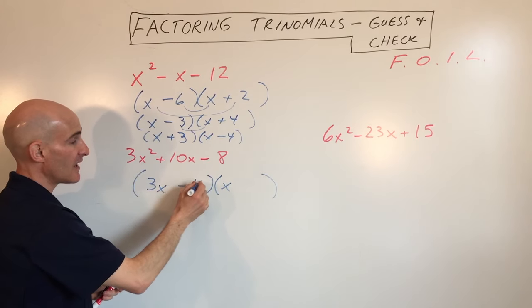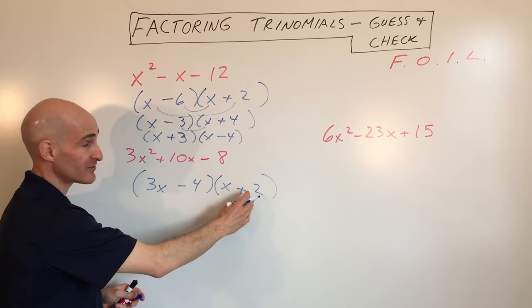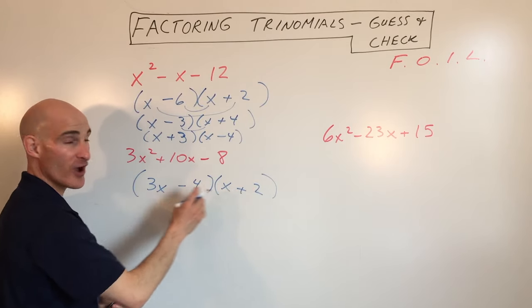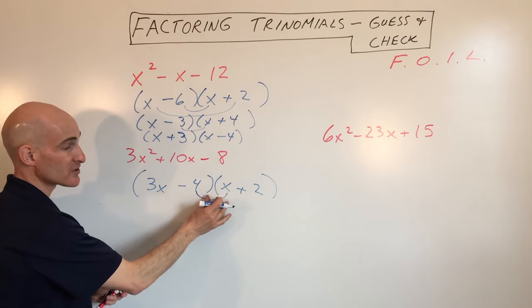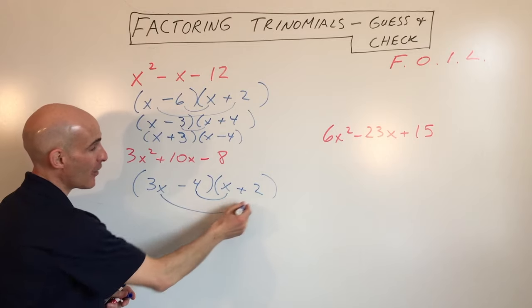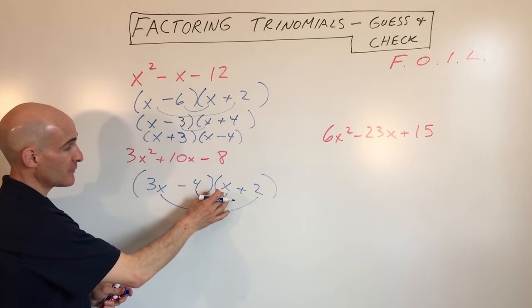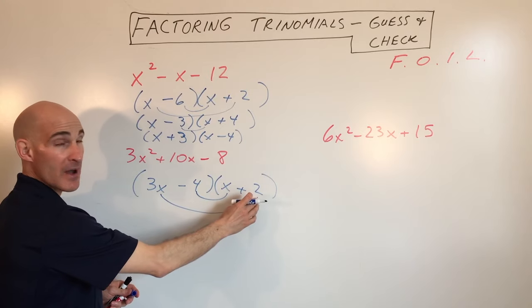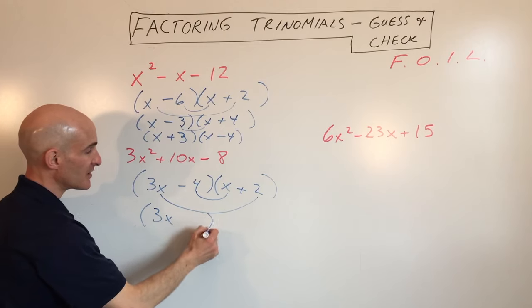Well, we could do negative 4 times positive 2, or we could do positive 4 times negative 2, or 8 times negative 1, and you go through the different combinations. But what we're checking is that the inner product, the ones towards the inside, and the outer product add up to 10x. So let's see, do they? Negative 4x, positive 6x, that's 2x, we want 10x. Let's see if we can try another combination.